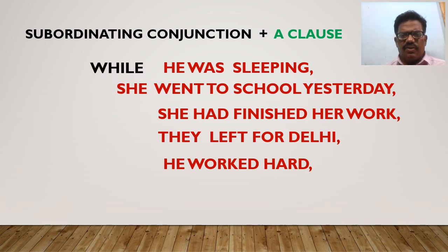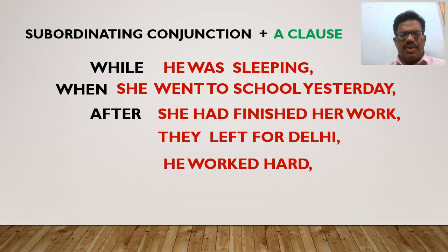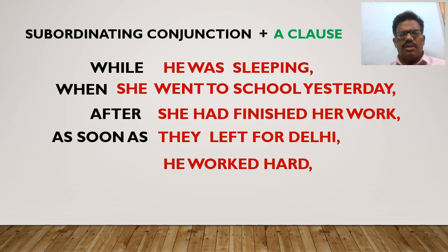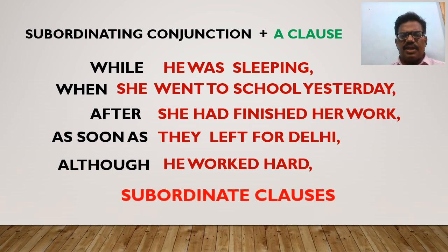Before the first clause 'he was sleeping,' we have placed the subordinating conjunction 'while.' Before the second clause, we have placed 'when.' Before the third clause, we have placed 'after.' Before the fourth clause, we have placed 'as soon as.' Before the fifth clause, we have placed 'although.' As a result of keeping the subordinating conjunctions before the clauses, all these clauses will be changed into subordinate clauses.